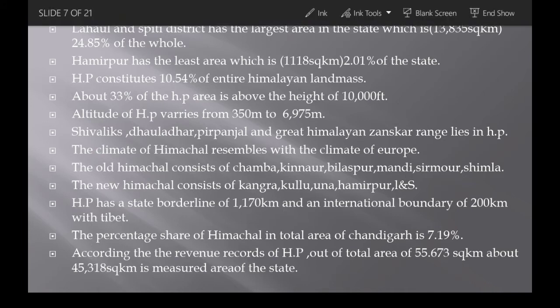Some important facts: Lahaul-Spiti is the largest district of Himachal Pradesh, with an area of 13,835 square kilometers, which is 24.85% of the state. Hamirpur is the smallest district, with an area of 1,118 square kilometers, which is 2.01% of the state. The Himalayan land mass constitutes only 10.54% of Himachal Pradesh.